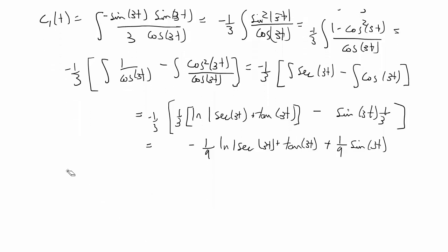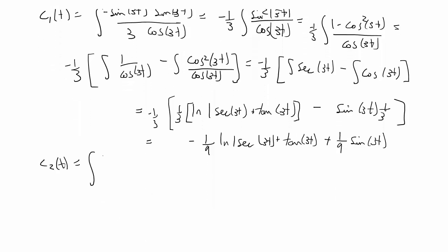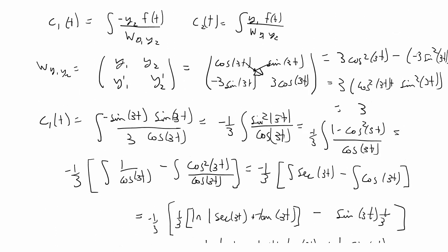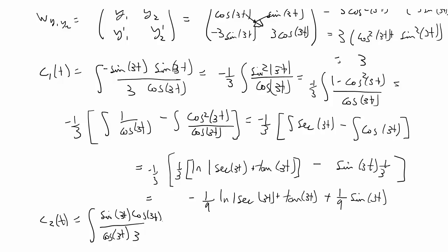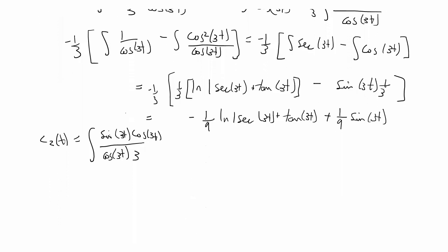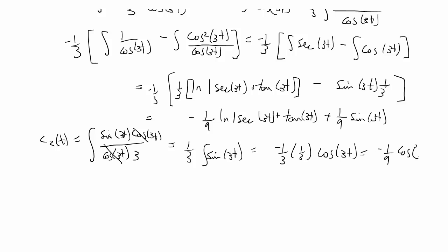Next we find c2(t): the integral of y1·f(t) over the Wronskian, which is cos(3t) times tan(3t) — that is sin(3t)/cos(3t) — all over 3. The cos(3t) cancels, leaving one-third the integral of sin(3t). Evaluating gives negative one-third times (1/3)·cos(3t), so c2(t) = −(1/9)·cos(3t).